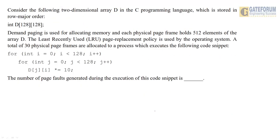Consider a C program with a 128×128 array stored in row-major order. Demand paging is used for memory allocation, each physical page frame holds 512 elements of the array, and LRU page replacement policy is used. There are 30 physical page frames available. We need to calculate the number of page faults generated during the execution of the code.